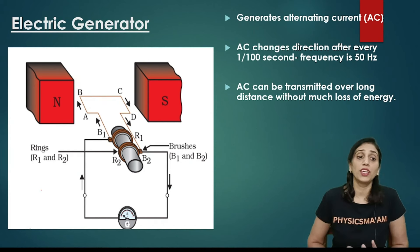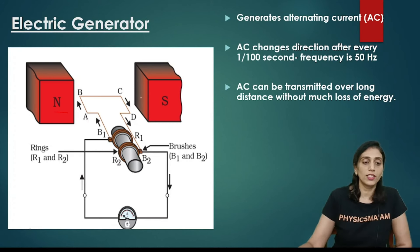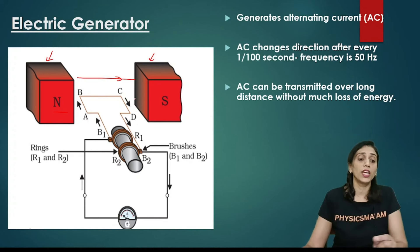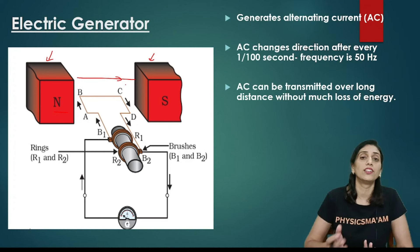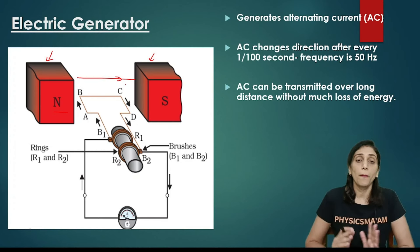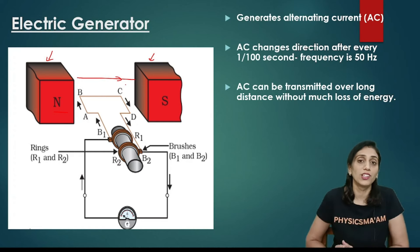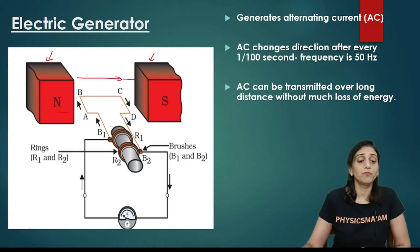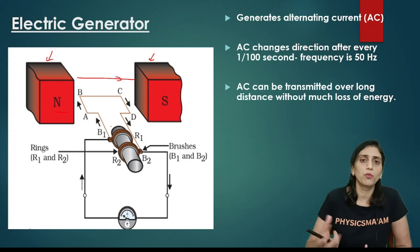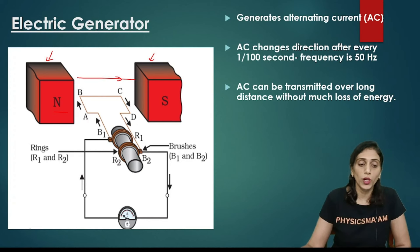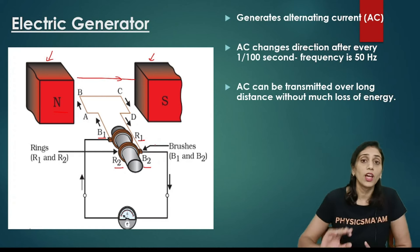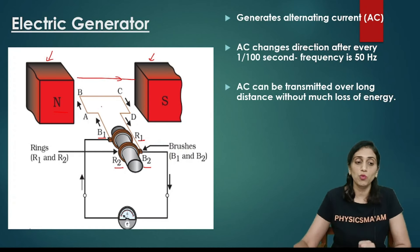Now we will see from the diagram how the generator works. As you can see, the north and south pole of the magnet is kept, and across them the magnetic field direction is shown. We have a coil ABCD — generally we consider one coil for understanding to know what the current direction is, but in reality there are multiple coils with many turns, so the current will be multiplied. This coil ABCD is rotated using mechanical energy or a prime mover. There are two rings R1 and R2, on which brushes B1 and B2 are fixed. The brushes are stationary — they will not move. The rings are connected to the axle which rotates, so as the rings move the coil also moves.